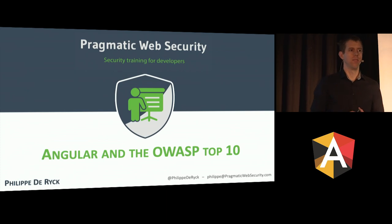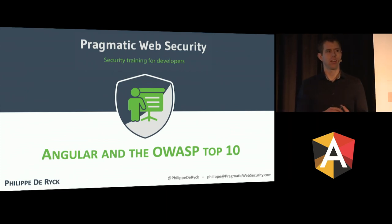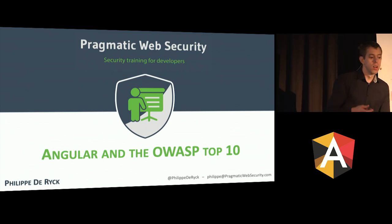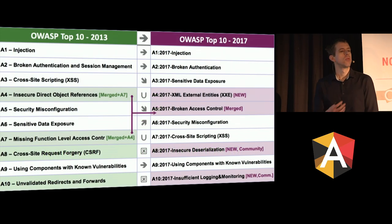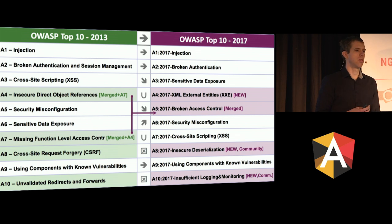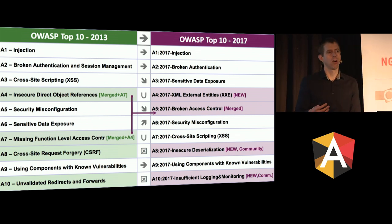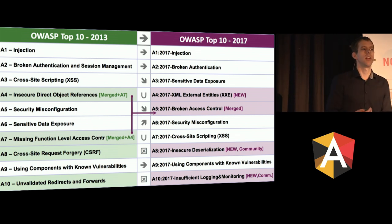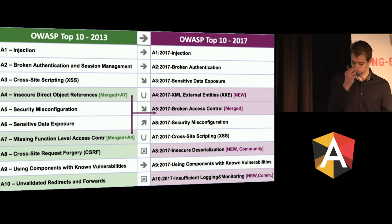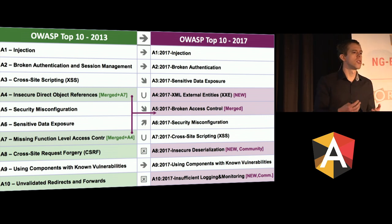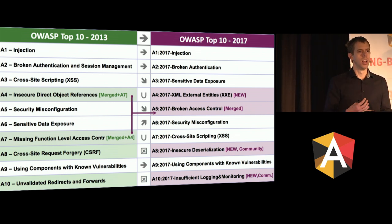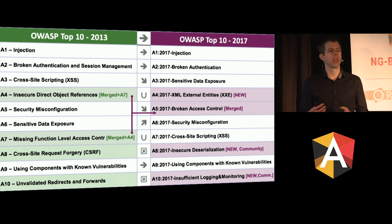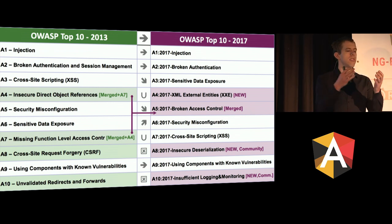Who here knows the OWASP Top 10? About a third of the room. In case you don't know the OWASP Top 10, this is a list of the 10 most risky vulnerabilities in web applications. It's a document produced by OWASP, a nonprofit, aiming to improve the current state of security in web applications. They build a new version of the Top 10 every couple of years. It's an overview of the most dangerous things you should be worried about as a developer — not the most common vulnerabilities, not the most easy to exploit, but a combination of all of those factors.